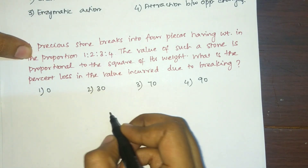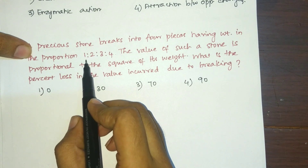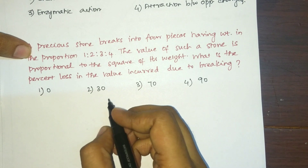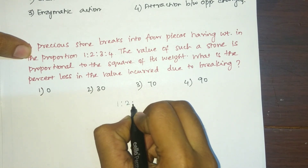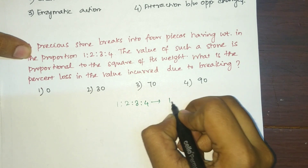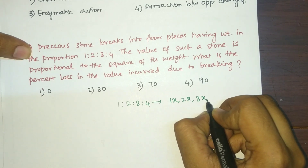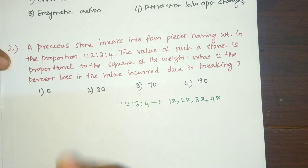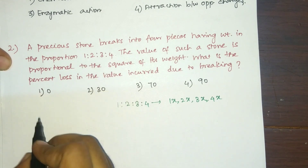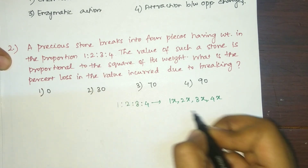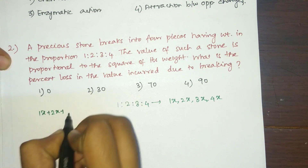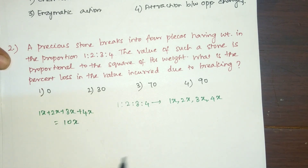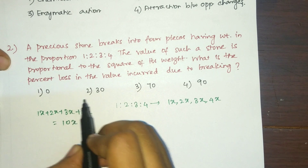Since the weights are given in ratio, there is a common factor for all numbers. The ratio 1:2:3:4 is represented as 1x, 2x, 3x, and 4x. The weight of the big stone is the sum of all pieces: 1x + 2x + 3x + 4x, which equals 10x.